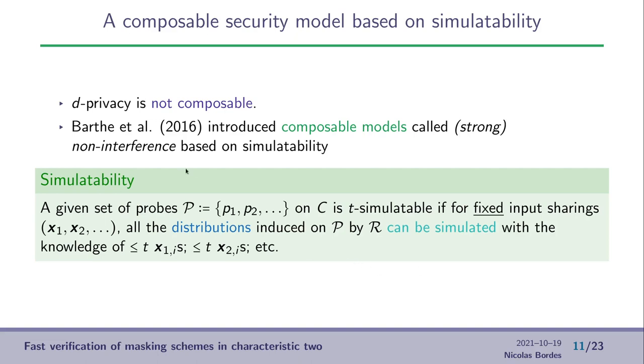So, simulatability is a property of a given set of probes. And this set of probes is said to be T-simulatable if for a fixed input sharing of the X, the distribution induced on this set of probes by the additional random masks can be simulated perfectly with the knowledge of less than T shares for each input.